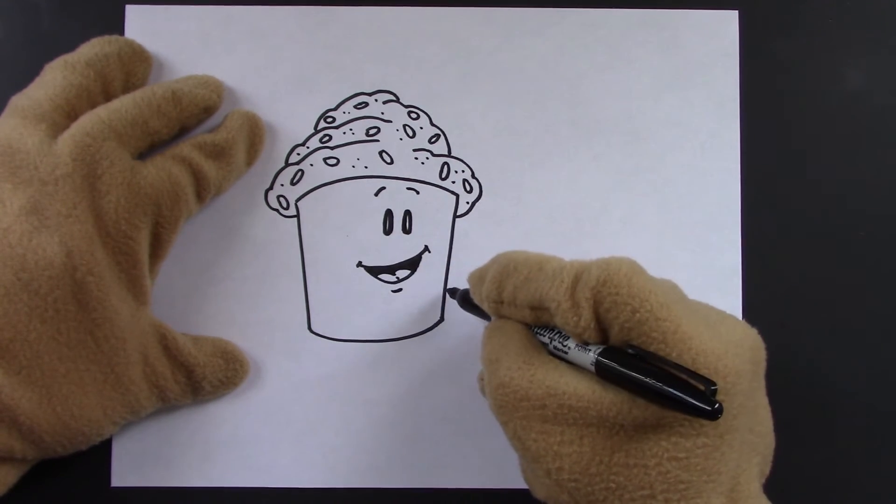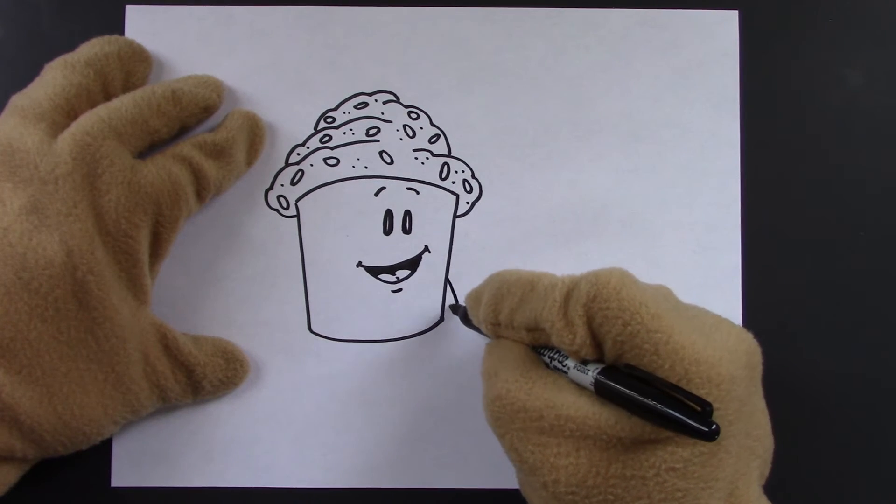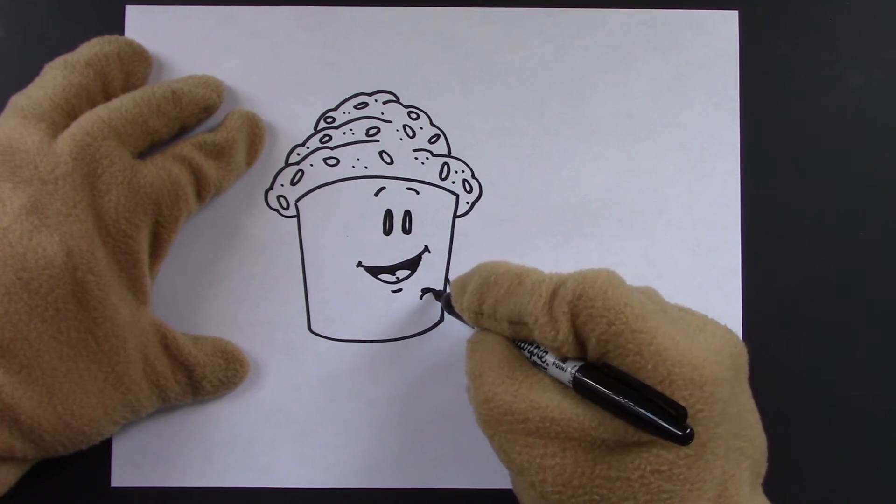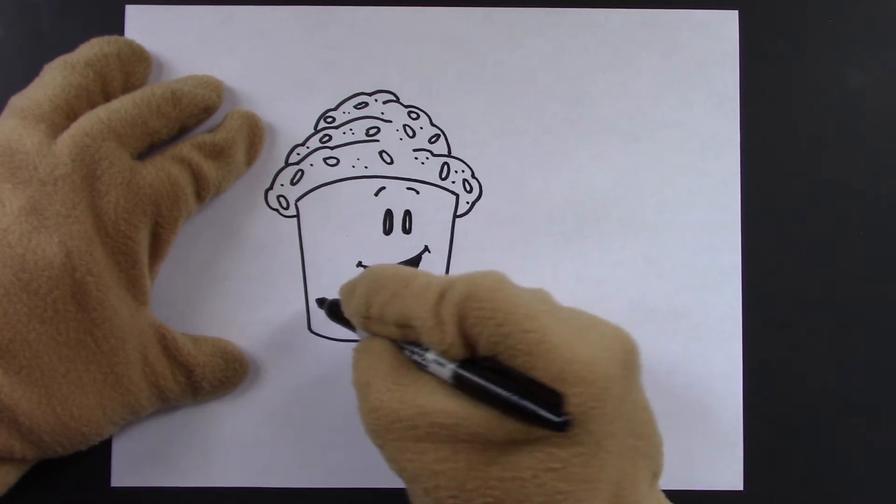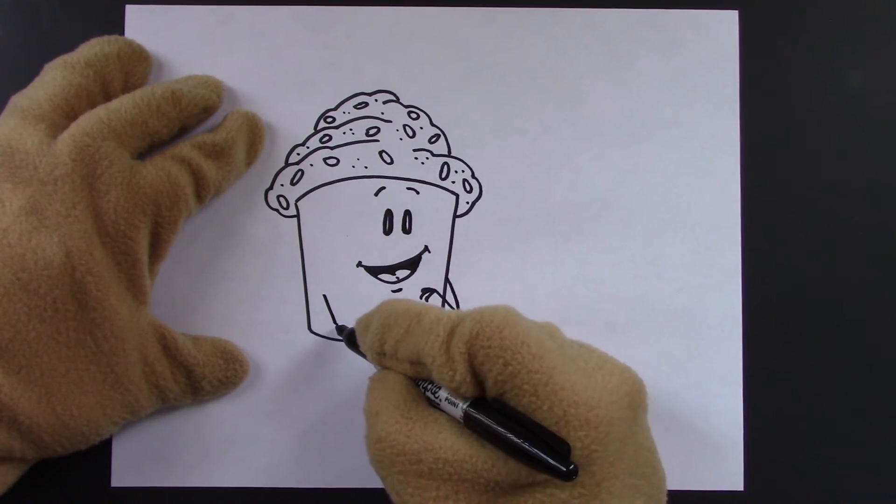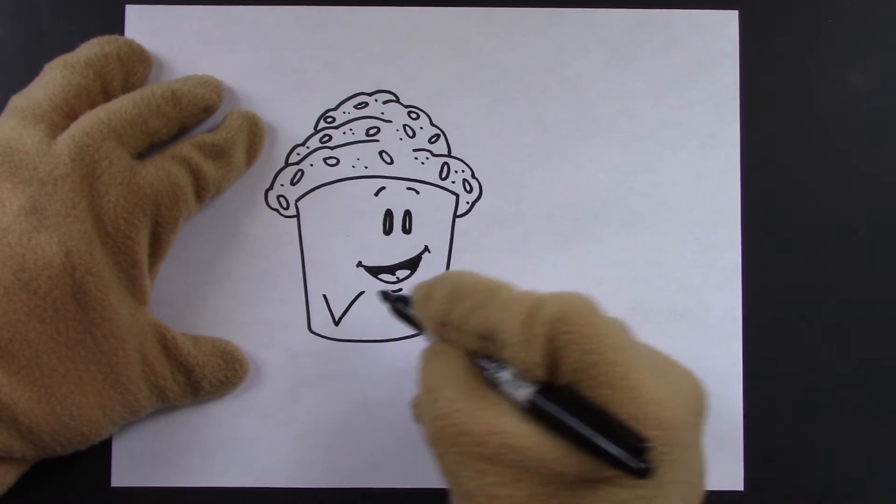Now we'll do the two arms. We'll do one arm over here. A few little fingers. And one arm over here, which is a V shape. And we'll add fingers on the end.